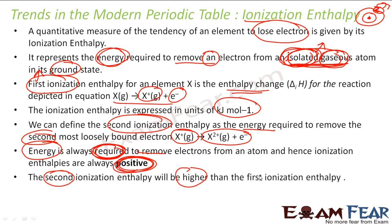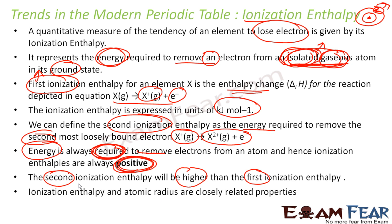Note that the second ionization enthalpy is higher than the first ionization enthalpy, because you need to put in more energy to remove the second electron than to remove the first. Ionization enthalpy and atomic radius are closely related. As atomic size increases, ionization enthalpy decreases, because the outermost electron is loosely bound to the nucleus and can be easily removed. But if the atomic size is smaller, the nucleus holds the electron more tightly and it is difficult to remove the outermost electron.